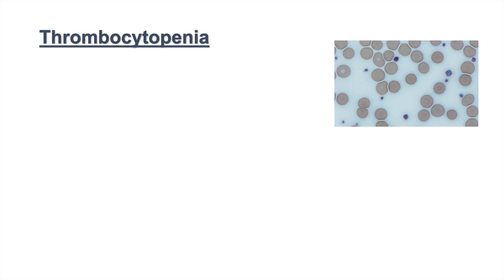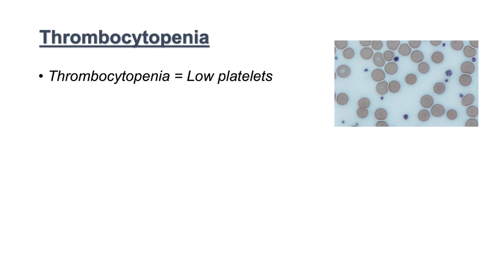Hey everyone, in this lesson we're going to talk about thrombocytopenia, and we're going to go over an approach to how we can determine the cause of thrombocytopenia. So to begin, what is thrombocytopenia? Thrombocytopenia is basically a low count of platelets — specifically, less than 150 times 10 to the ninth per liter of blood.